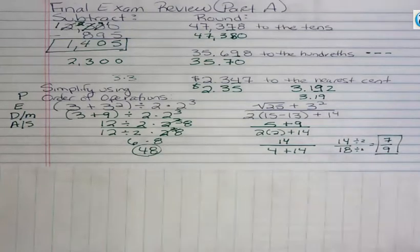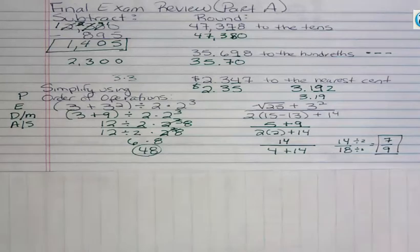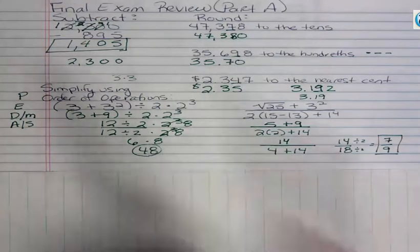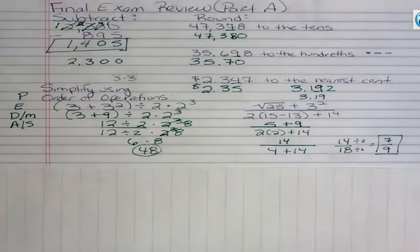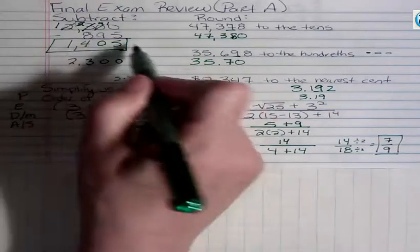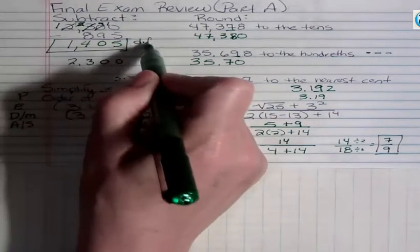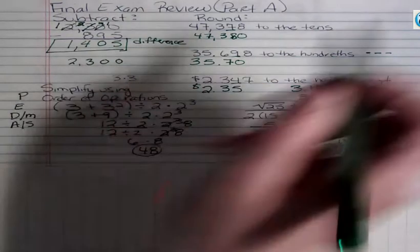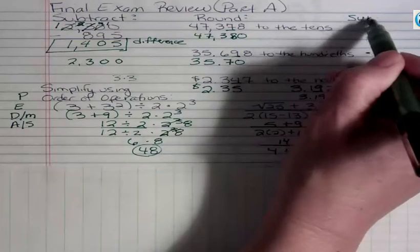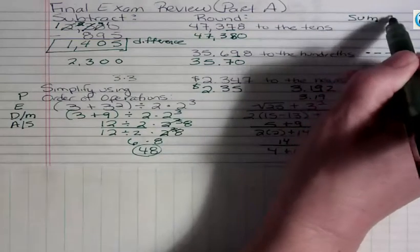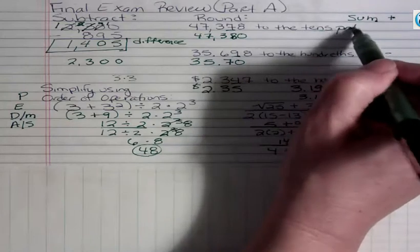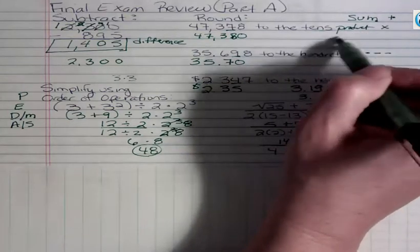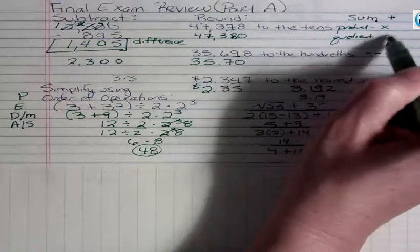All right. That's order of operations with whole numbers. Also rounding and just a brief thing on subtraction. You could have multiplication or division or addition on this test. Remember, when we talk about a subtraction problem, it's a difference. If they ask you to find the sum, that is addition. If they ask you to find the product, that's multiplication. And if they ask you to find the quotient, that's division.